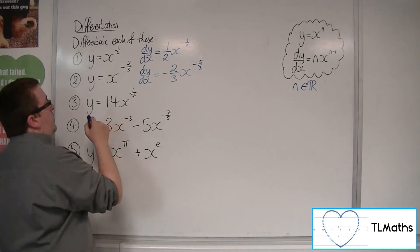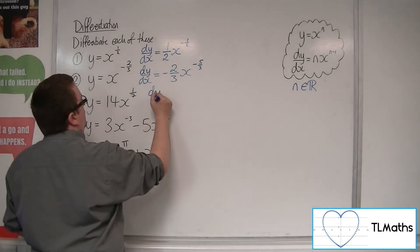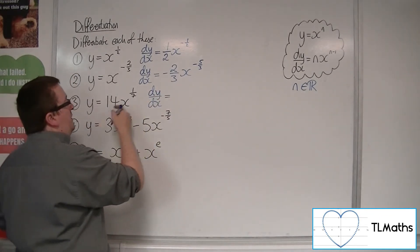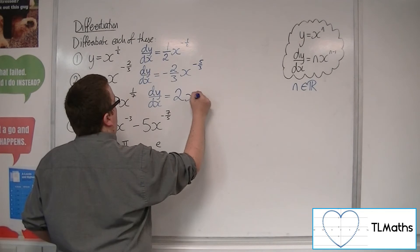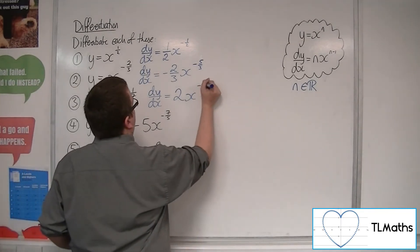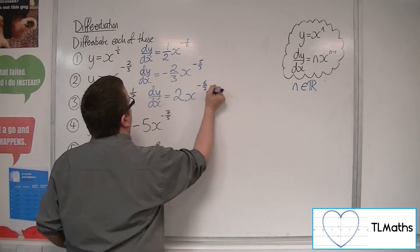For number 3, the 1 seventh will multiply with the 14, so 14 divided by 7 is 2, and then take 1 off the power. So we will have minus 6 sevenths.